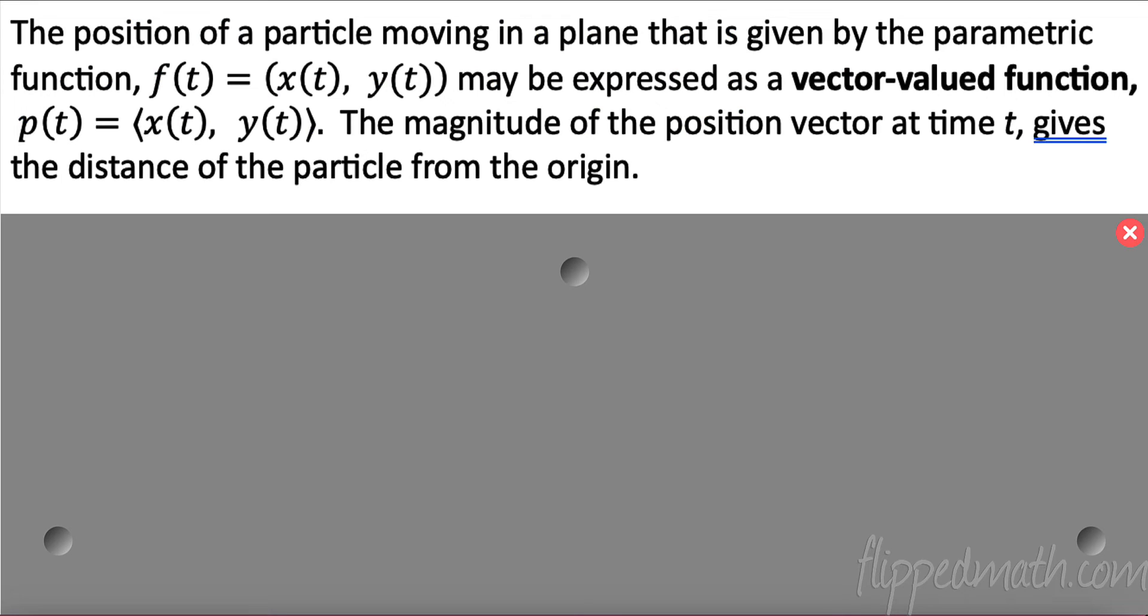The position of a particle moving in a plane that is given by a parametric function x(t), y(t) - two functions making up like a vector - may be expressed as a vector-valued function. In other words, we can plug in our t, find our x component, plug in our y, find a y component. The magnitude of the position vector at time t gives us the distance of the particle from the origin. So let's take a look at one.